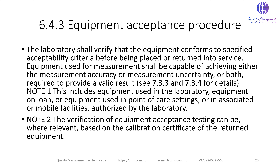6.4.3 Equipment Acceptance Procedure: The laboratory shall verify that equipment conforms to specified acceptance criteria before being placed or returned into service. Equipment used for measurement shall be capable of achieving the measurement accuracy or measurement uncertainty required to provide a valid result. This includes equipment on loan, equipment in point-of-care settings, or equipment in associated or mobile facilities authorized by the laboratory. Verification of equipment acceptance testing can, where relevant, be based on the calibration certificate of the returned equipment.